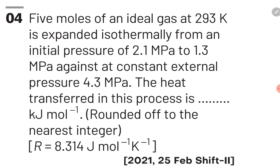Because this is an isothermal process, the value of ΔU will be equal to 0. Internal energy only depends on temperature, and because temperature remains constant, ΔU = 0. So the equation becomes 0 = Q + W, and rearranging, Q = −W. To find W, we will use the master equation of work done: W = −P_external × ΔV.